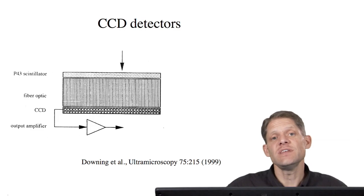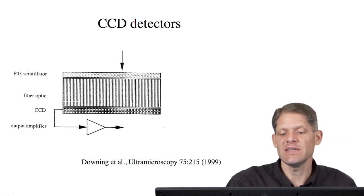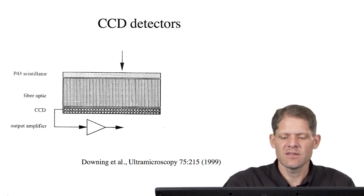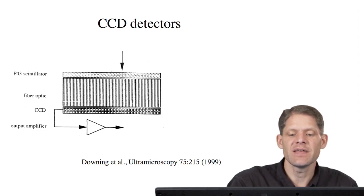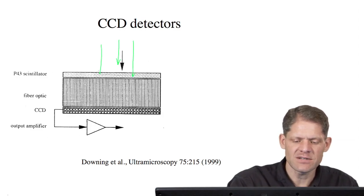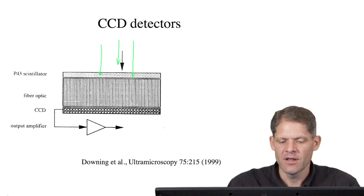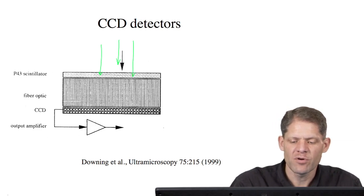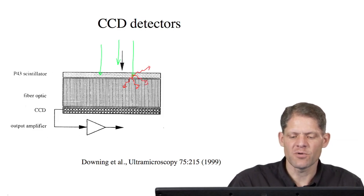The anatomy of a CCD detector is that the top layer is a scintillator. Incoming electrons are coming down through the column, and they're hitting the scintillator. In the scintillator material, the electrons are scattered, producing photons. And the photons emerge in all directions.